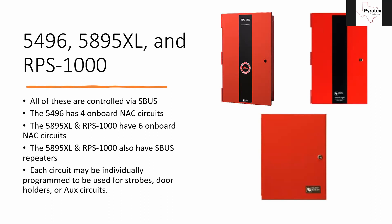The 5895XL and the RPS1000 are almost the exact same board — except one works with Silent Night panels and the other with IFP (Fahrenheit) panels. They cannot be mixed and matched. The 5895XL is the over-the-counter Silent Night product; the RPS1000 is the Fahrenheit product. Both have six onboard NAC circuits. They also both have SBUS repeaters in them, which is great for schools and large footprints. The further SBUS goes, the weaker the communication signal gets, so these bigger power supplies with the repeater refresh the signal — duplicating, restrengthening, and sending it out each time. The 5496 is not capable of that, but the 5895XL and RPS1000 are.